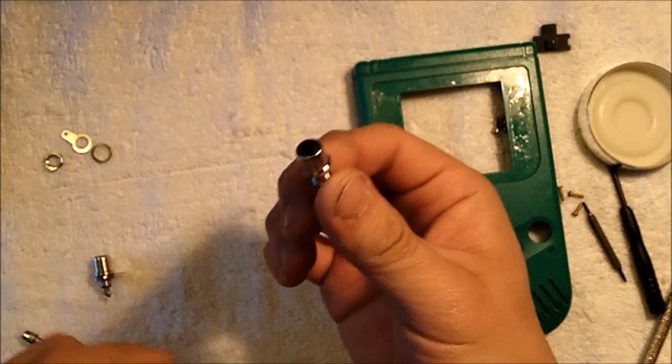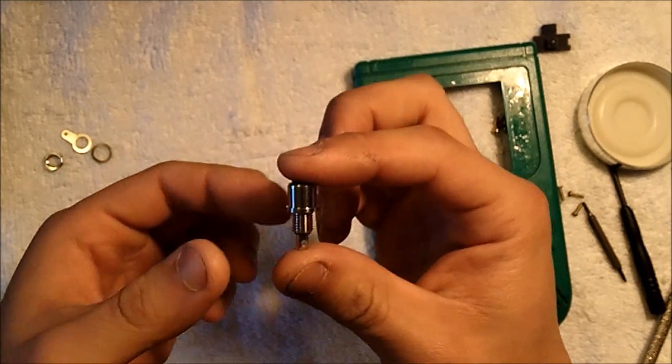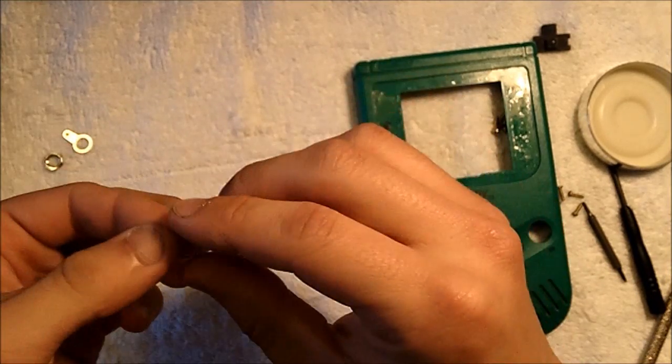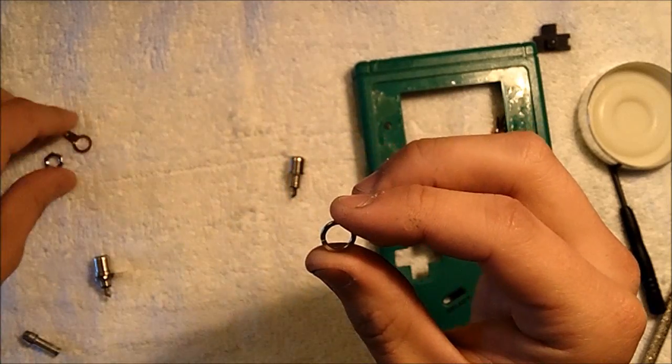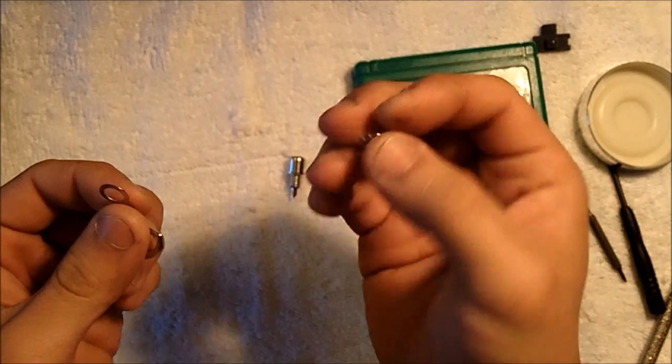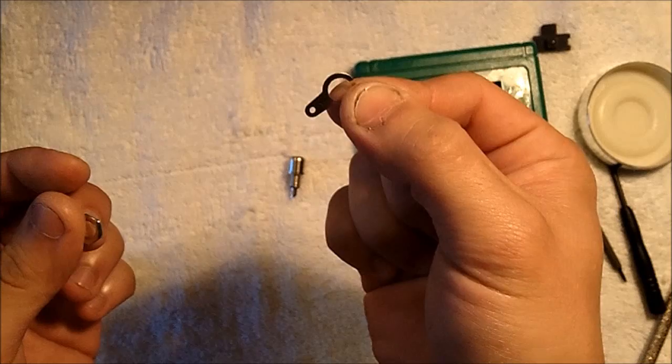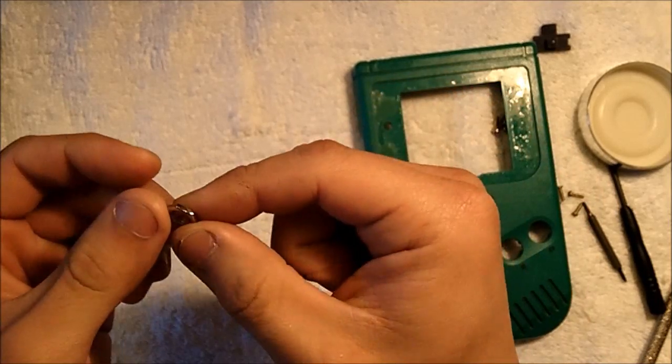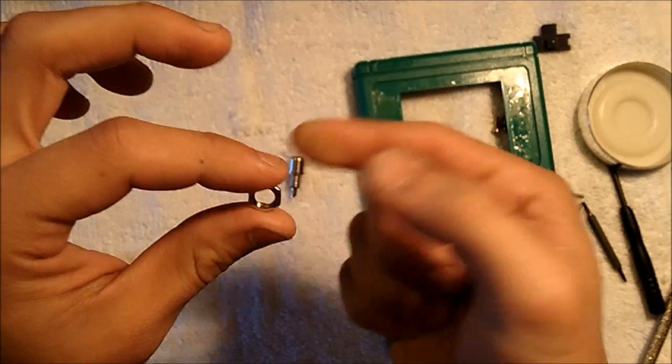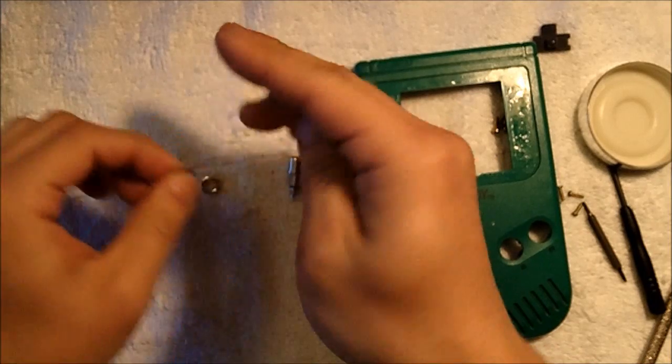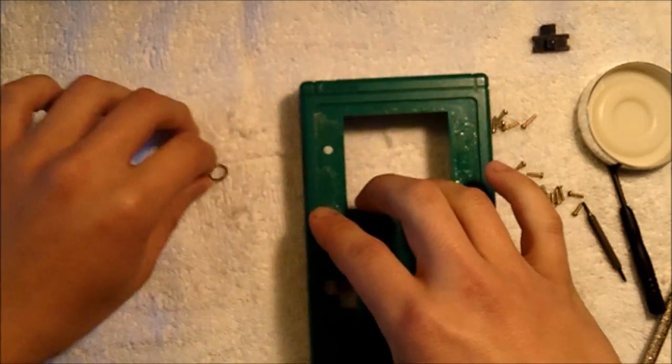Panel mount jacks, they'll be coming with the jack itself and this particular RCA jacks, they came with a lock washer, a negative tab, as well as a nut. We'll be drilling into the case.